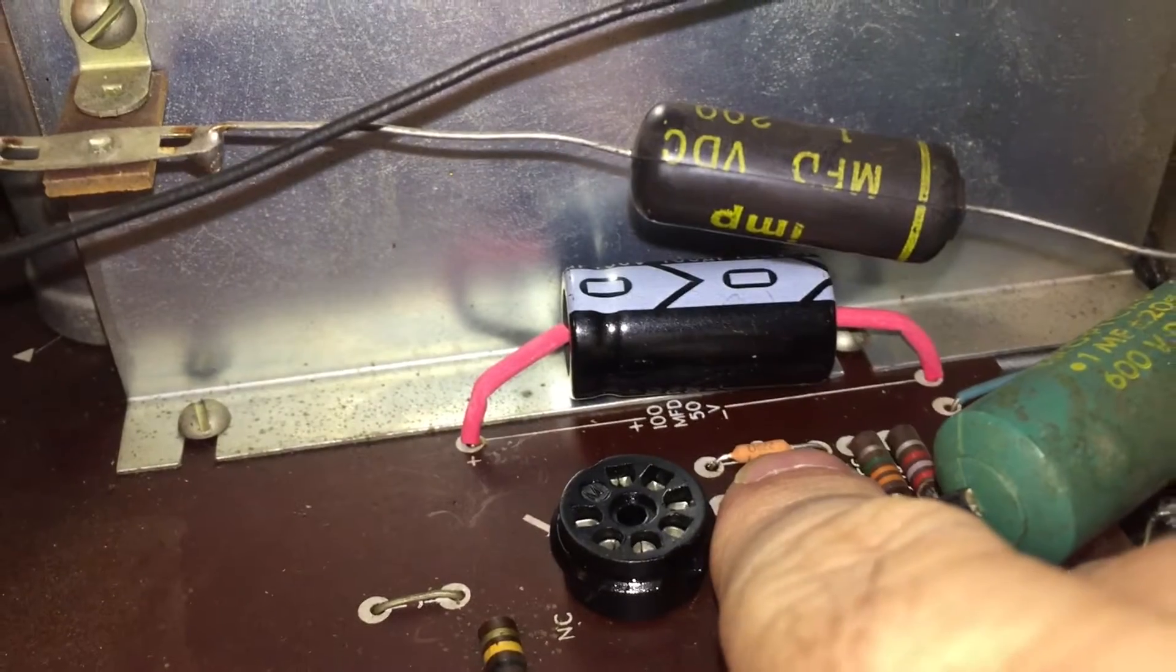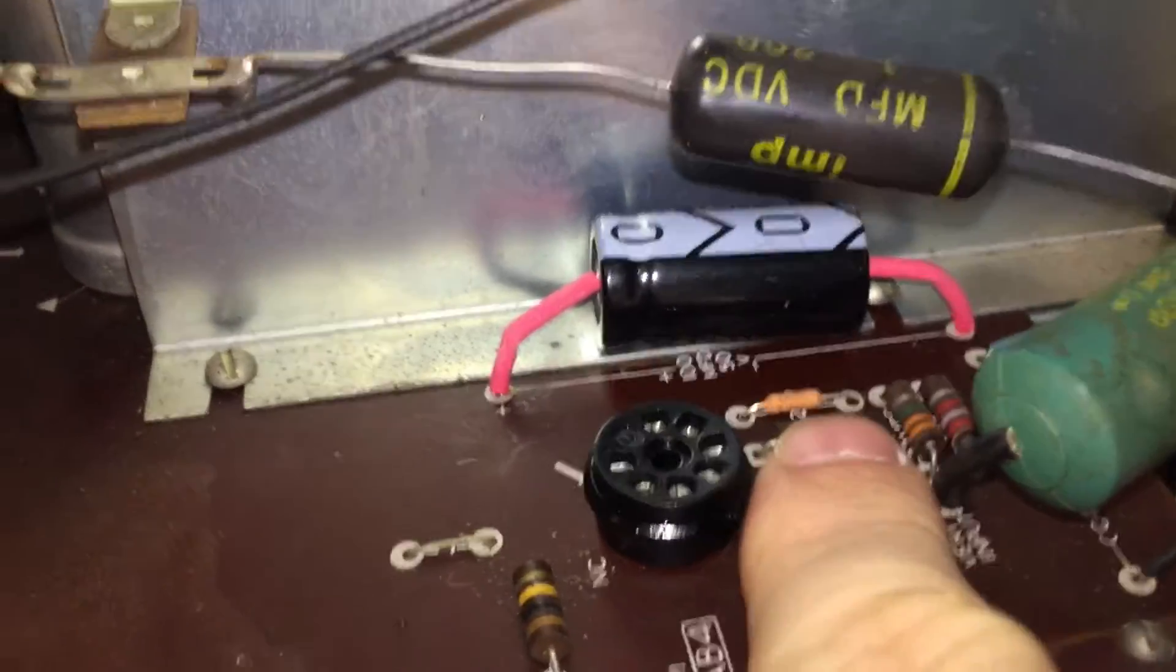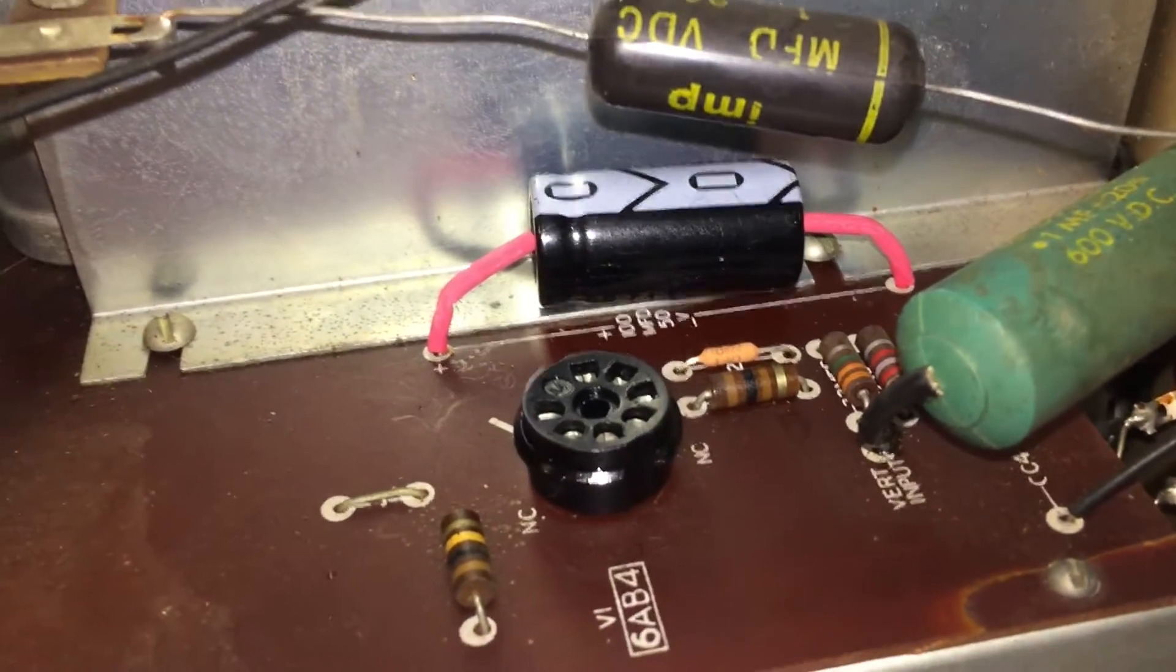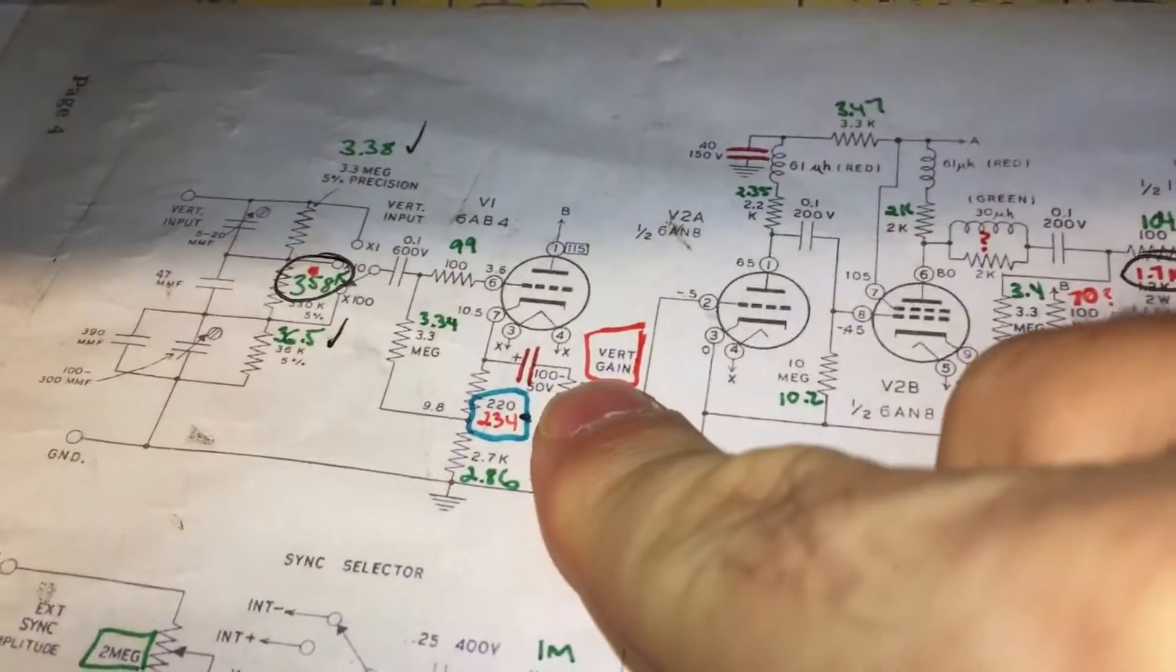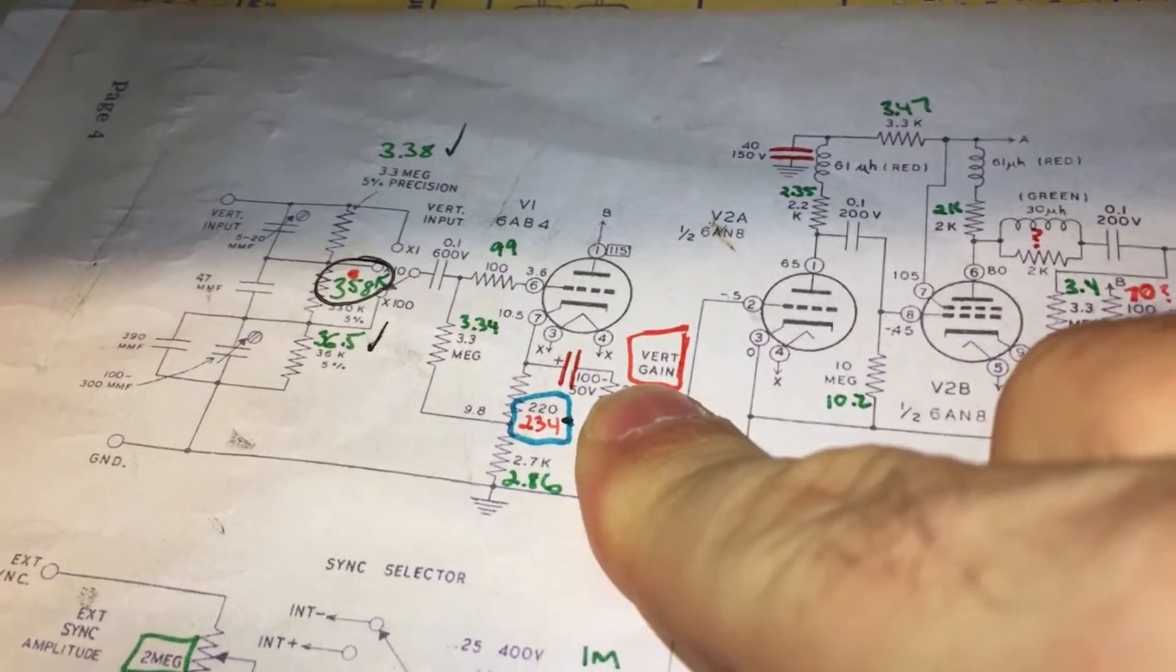The resistance value was 234, should be reading 220. Now reading 220 as annotated here on my diagram, and then I circled it in blue to show that I've replaced that.